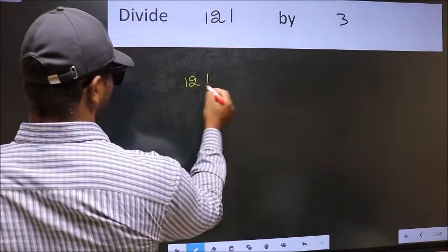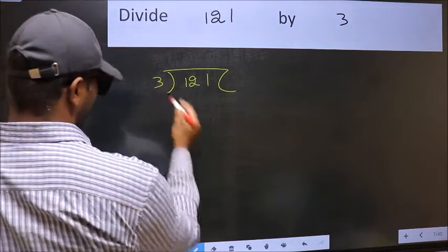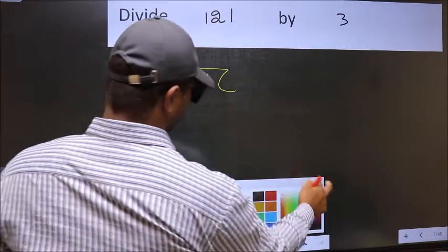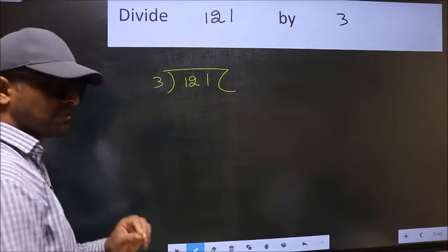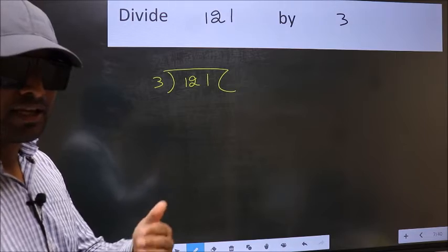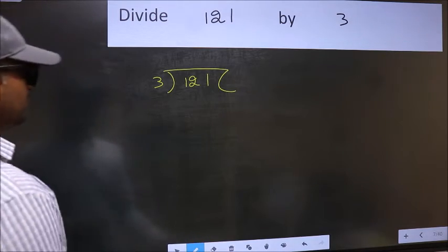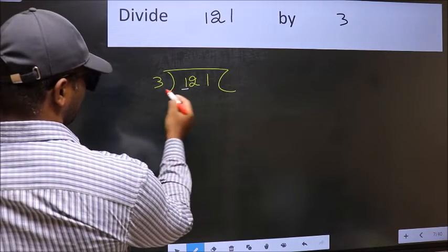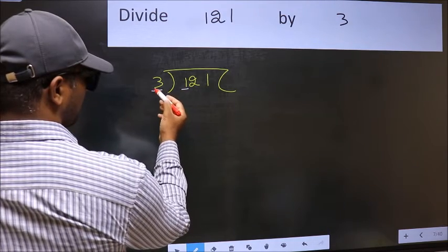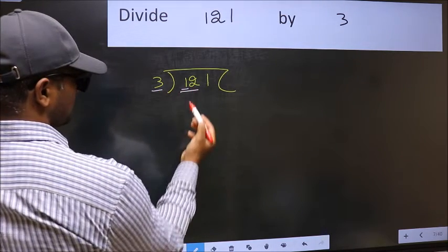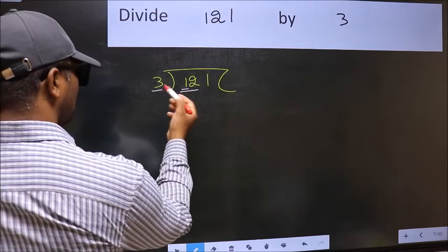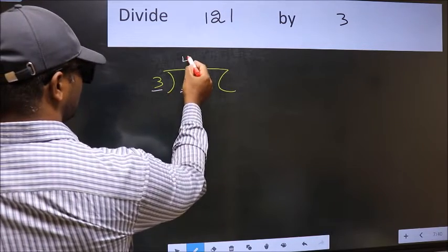121, 3 here. This is your step 1. Next, here we have 1 and here 3. 1 is smaller than 3 so we should take 2 numbers, 12. When do we get 12 in 3 table? 3 fours, 12.